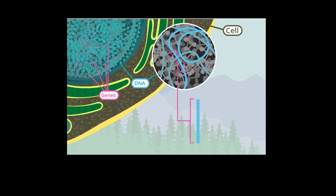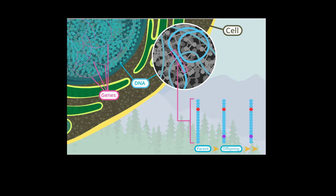DNA is made up of long strands of building blocks. When mutation generates a new DNA variation in an individual, it can pass to their offspring. Over multiple generations, DNA variations can add up.